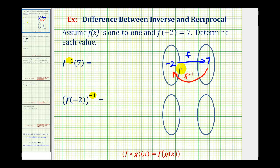Which means if we map f inverse, if the input is positive seven, then the output would be negative two for f inverse. So f inverse of seven is equal to negative two.